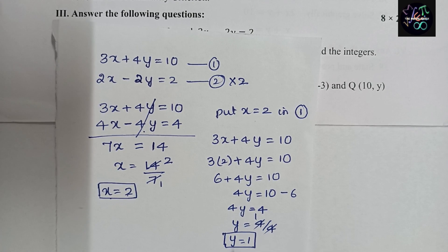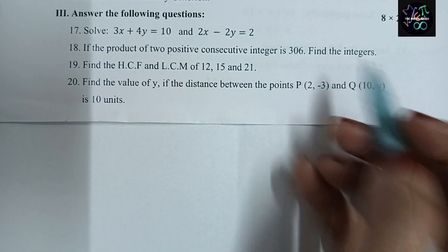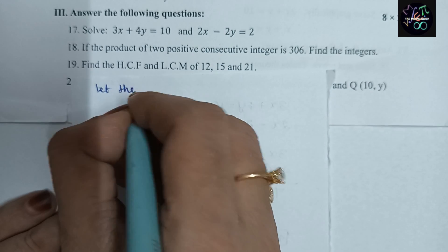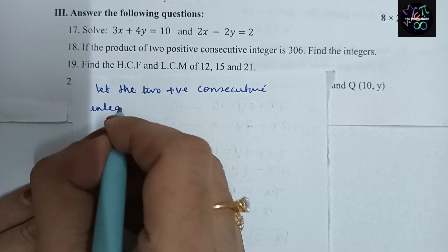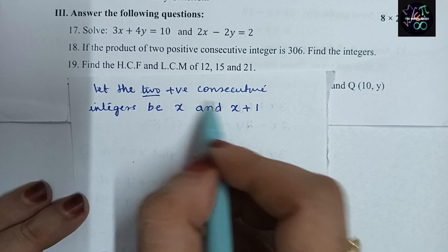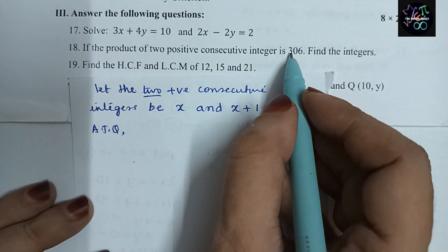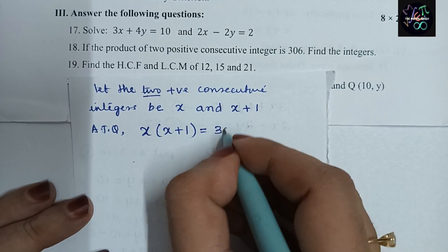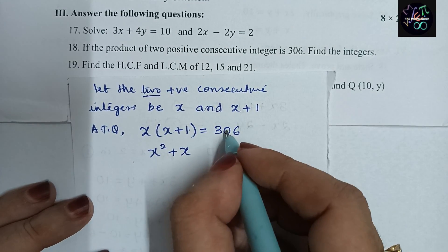Let us see the next question — question number 18. If the product of two positive consecutive integers is 306, find the integers. We will let the two positive consecutive integers be x and x + 1. According to the question, their product is 306, so x(x + 1) = 306.